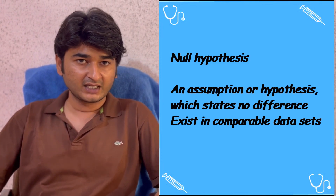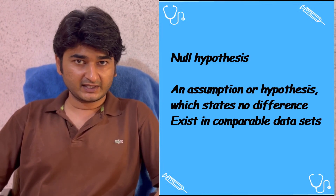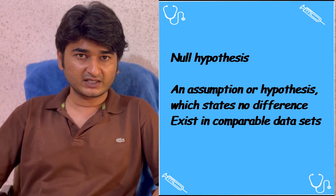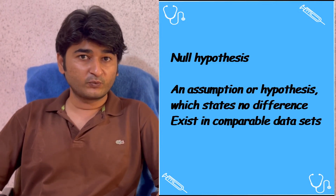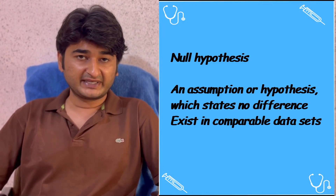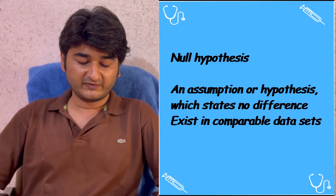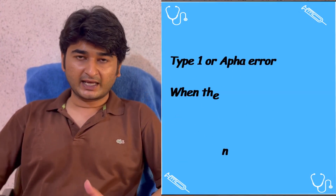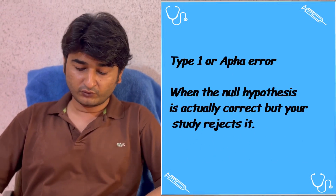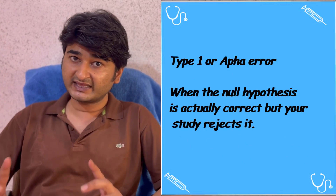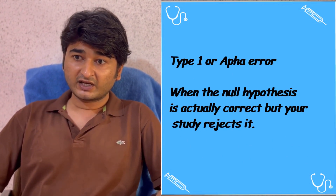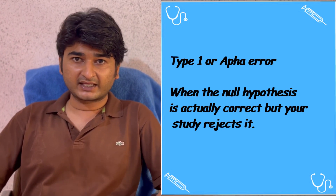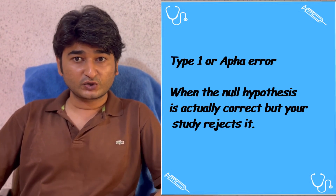In studies there are chances of errors. There are two types: one is alpha error, also called Type 1 error, and the other is beta error, also called Type 2 error. In a Type 1 alpha error, the null hypothesis is actually true — meaning there is no relationship between the two people — but in our study the result says there is a relationship.